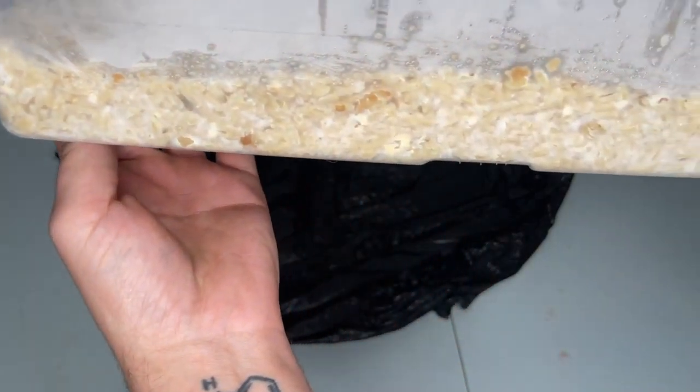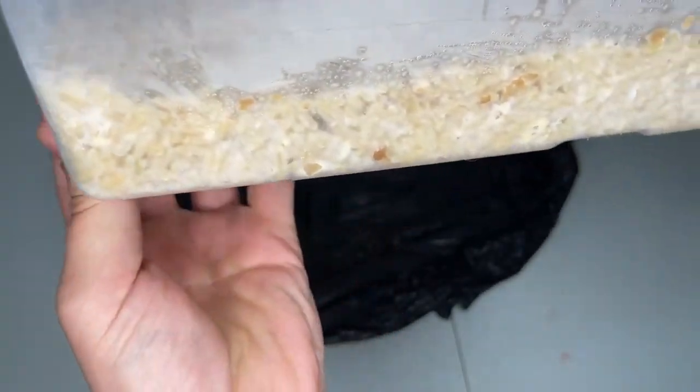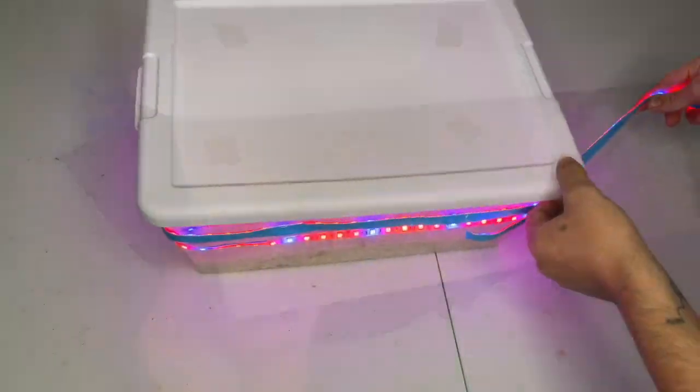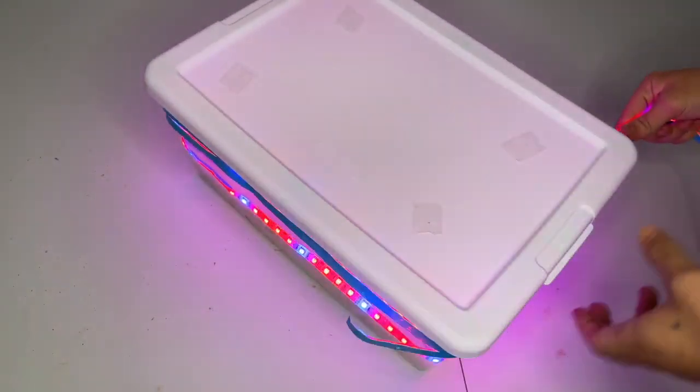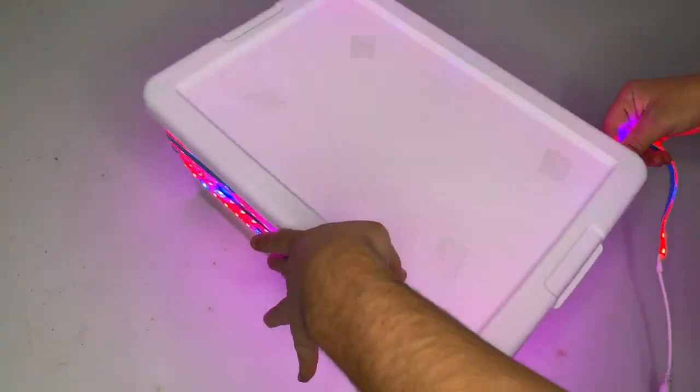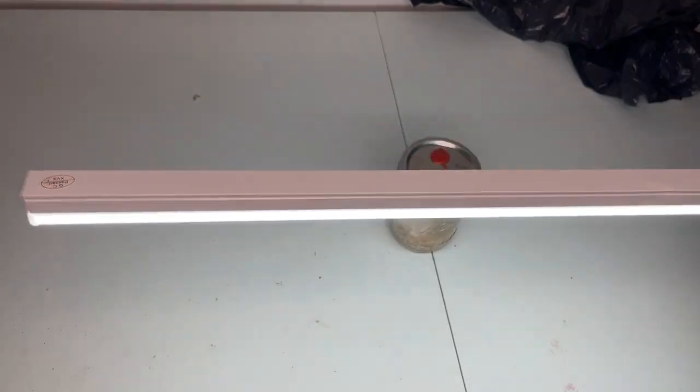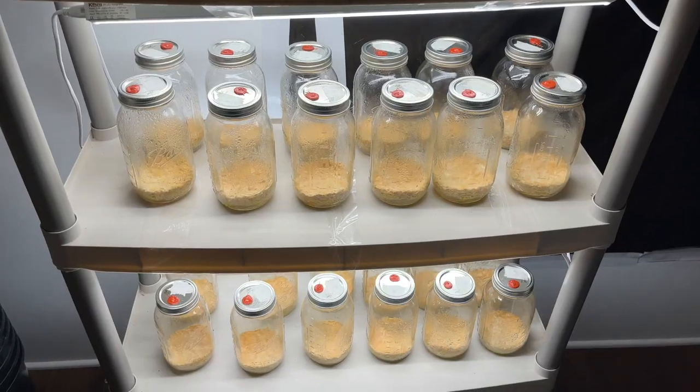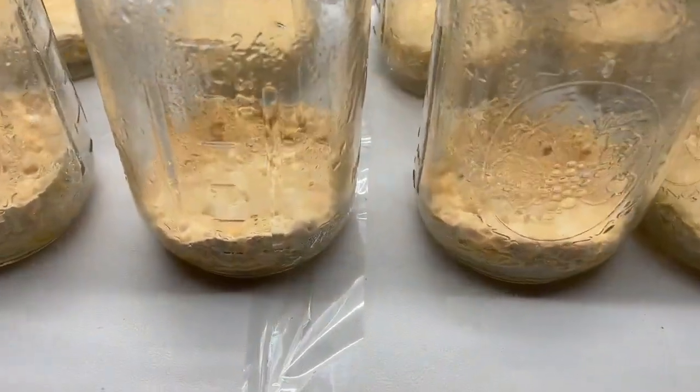The next step is to wrap an LED light strip around the bin to initiate fruiting. You should use a light timer to set the schedule for 12 hours on and 12 hours off. Another option would be to use these under cabinet lights. It is best to keep the temperatures between 65 and 68 degrees Fahrenheit while fruiting.